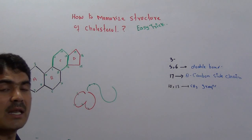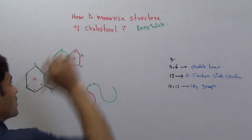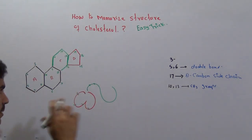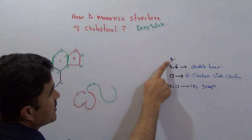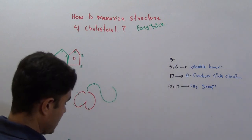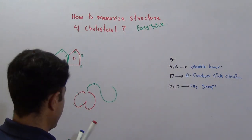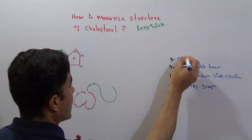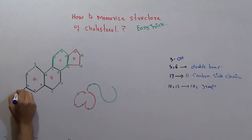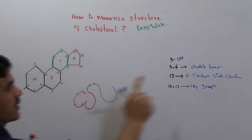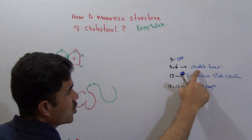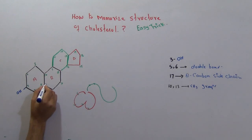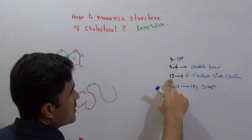Now here at carbon number three you will add an OH group. At carbon number three you will add an OH group. And then between carbon number five and six you will add a double bond here. And then at carbon number seventeen there is eight carbon side chain. You will add eight carbon side chain.